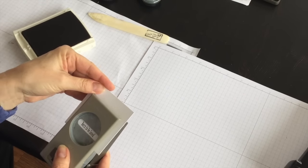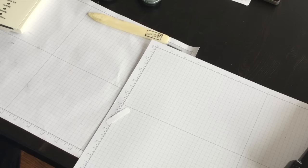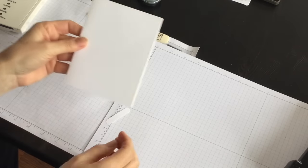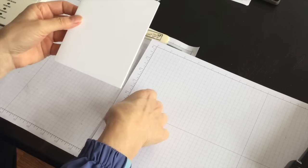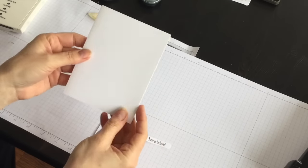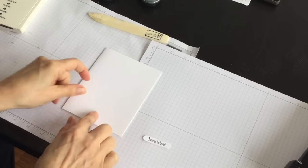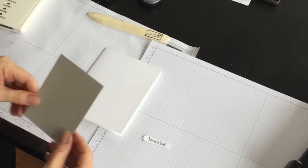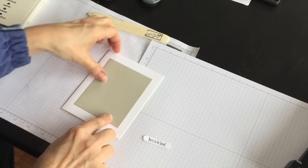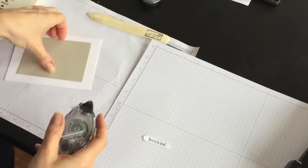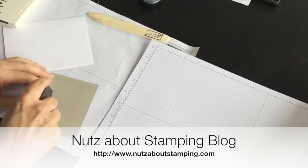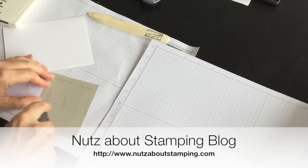And then I think I'm ready to put everything together. So for my card base I'm going to use whisper white and I've cut it eight and a half by five and a half and I scored it at the four and a quarter mark. And to that I'm going to add a piece of Sahara sand cardstock. I'll have the measurements over on my blog. I can't remember what they are right now.